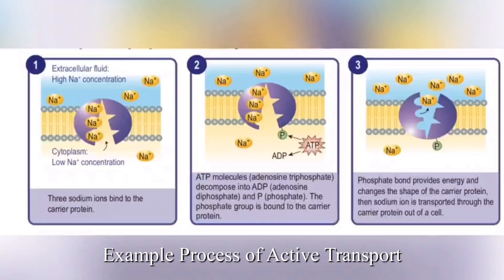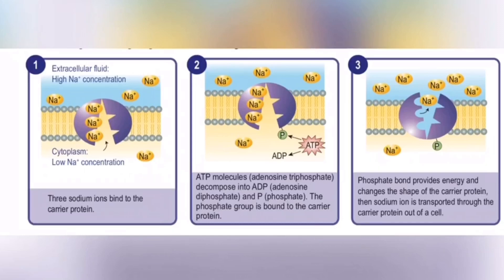Active transport has receptors to bind with ATP molecules so that it can change shape when a phosphate group attaches to it. As an example with the sodium-potassium pump: for the process of excretion, three sodium ions bind to the carrier protein. ATP decomposes to ADP and a free phosphate group. This phosphate binds with the carrier protein, providing energy for the carrier protein to change its shape, enabling the sodium ions to be transported out of the cell.